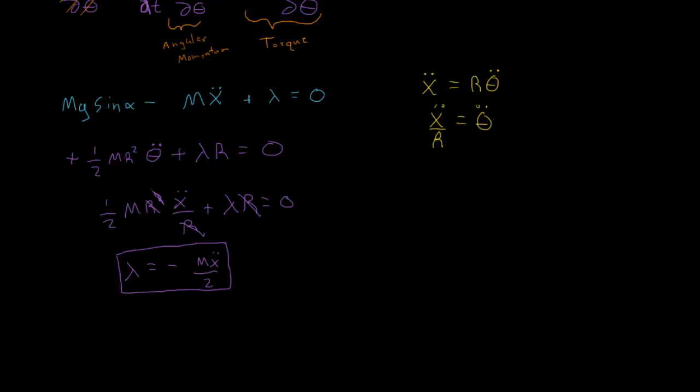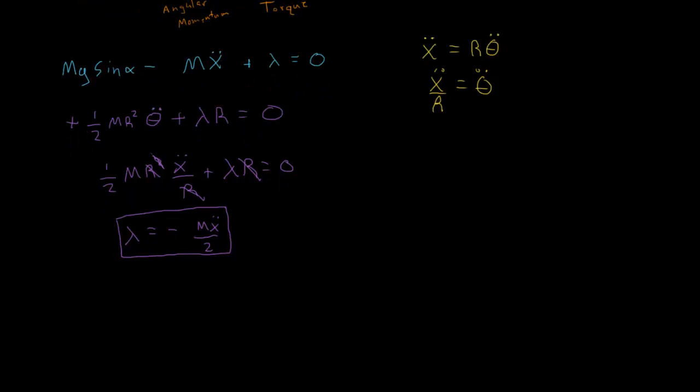Now I can just rewrite this thing here and eliminate lambda. So I can write m g sine alpha minus m x double dot plus this lambda, so minus m x double dot over two equals zero. So what can we do? m appears in each of these terms, so we can cross out these m's, divide both sides by m. And now we have minus x double dot and then a minus x double dot over two. So altogether, that's minus three halves x double dot. I'll just do three x double dot divided by two. So that's what these terms combine to. And then this is g sine alpha, so g sine alpha equals zero.